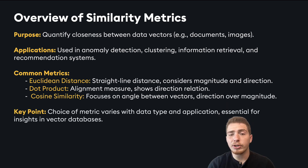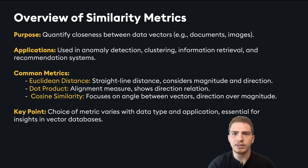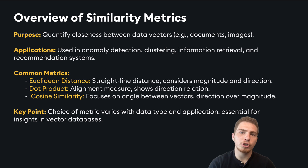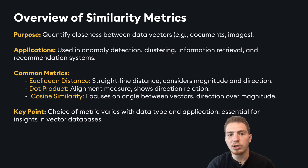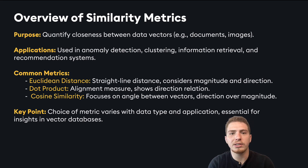Choosing the right similarity metric for your use case can be tricky. Ideally, you have some evals and you could use these to test multiple similarity metrics. But in practice, often these evals aren't available. So the best way to choose a similarity metric is to logic your way through it, thinking about what similarity metric was used for your embedding model when it was trained, and thinking about your data and how you want it compared.